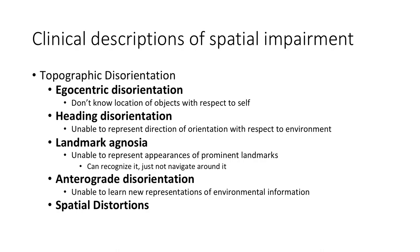Patients with egocentric disorientation also have difficulties judging distances between objects. The next type is heading disorientation, where patients are unable to set a course to where they want to go, even though they can recognize landmarks and often their own location. This can be described as not having a sense of direction, and it is often associated with injury to the right posterior cingulate cortex. Third is landmark agnosia, where patients are unable to use environmental features to orient themselves.